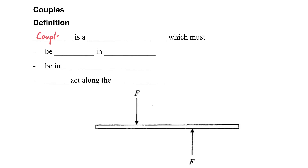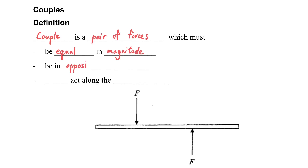A couple is a pair of forces. There are some definitions: the forces must be equal in magnitude and in opposite directions, and they must not act along the same line.